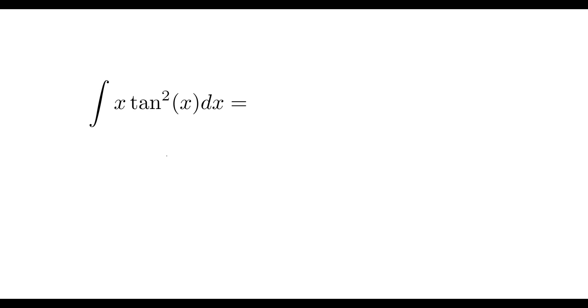The first thing that we will probably notice about this is that we're going to be using integration by parts. So really quick, what is our integration by parts formula? Well, that is the integral of u dv is equal to uv minus the integral of v du.